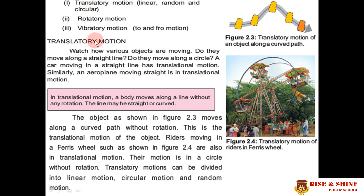Let's discuss translatory motion. In translational motion, a body moves along a line without any rotation. The line may be straight or curved. When any body moves along a straight or curved path without rotating, we say it possesses translatory motion, as shown in figure 2.3.